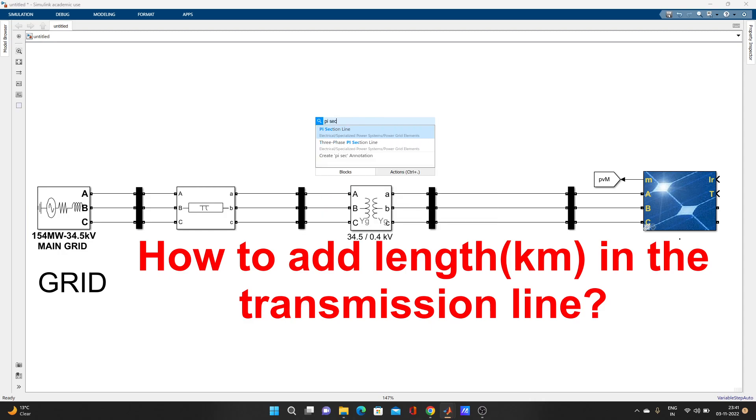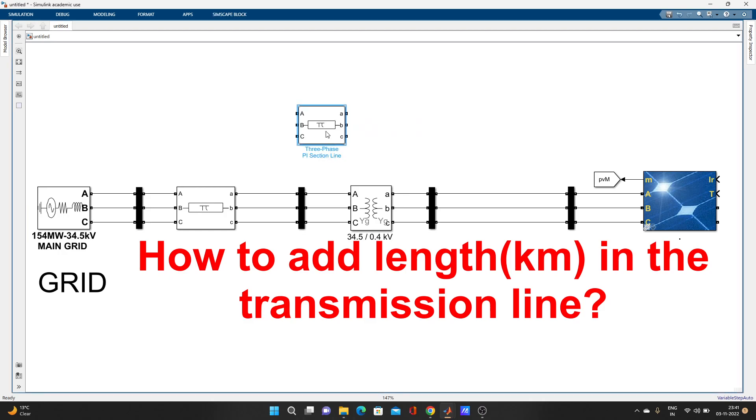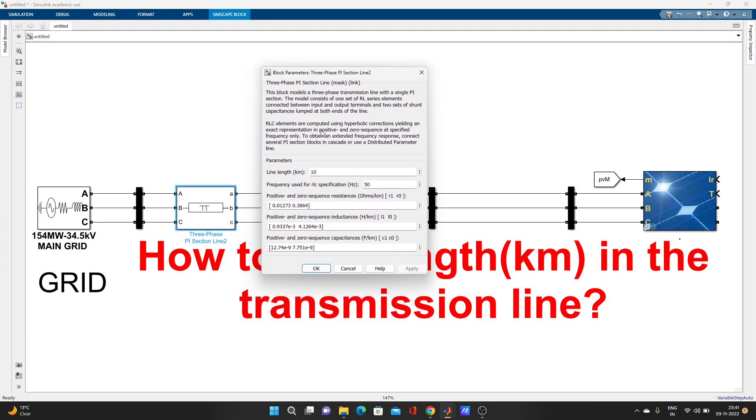Search PI section. It will come 3-phase PI section line. Look, the same thing I have added here. I will delete this one and now just double-click on it. So how to add that km? Just look here, it is line length in km. It is already there. You can give anything: 5, 6, 10, 1, 9, 100, whatever you need.